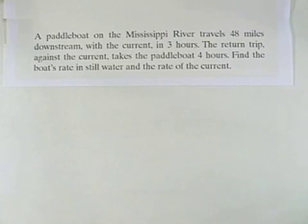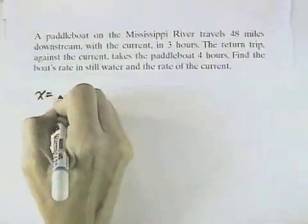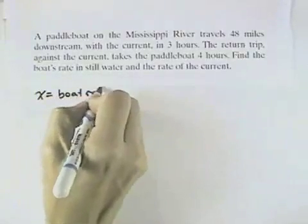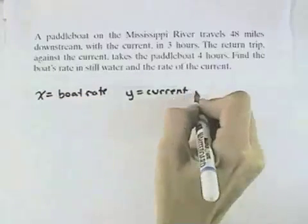We're using our four-step strategy. First thing we want to do is identify the variables. So let's let x equal the boat's rate, and we'll let y equal the current rate, or the rate of the current.